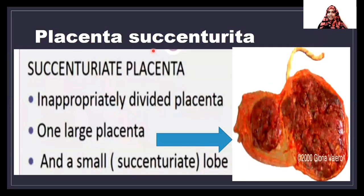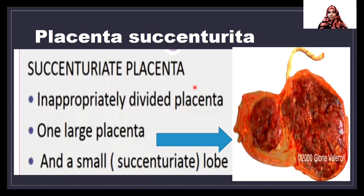The first one is placenta succenturiata. As you can see in this picture, it has two lobes — a big lobe and a small lobe. This type of placenta is called succenturiate placenta, and we can describe it as an inappropriately divided placenta.